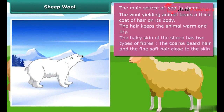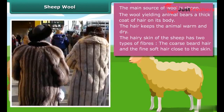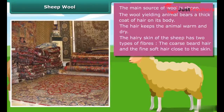The hairy skin of the sheep has two types of fibers: the coarse beard hair and the fine, soft hair close to the skin. The fine hair provides the fibers for making woolen clothes, while the coarse hair provides wool for making carpets.